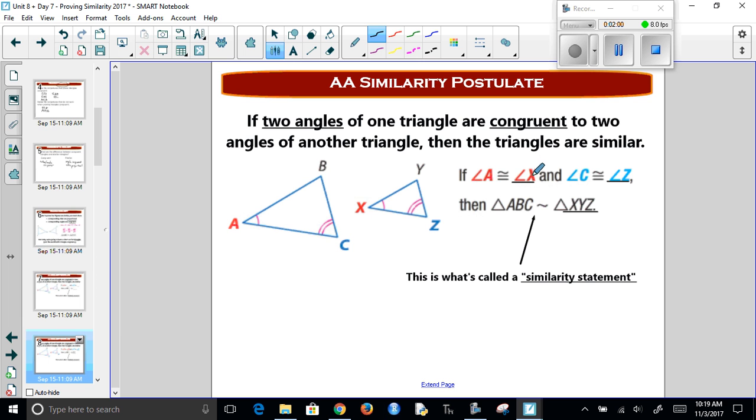So if angle A is congruent to angle X and angle C is congruent to angle Z, then we know that these two are similar triangles. They're not congruent. You can see this is bigger than this one, but we know that they're similar. And some people ask, why isn't this AAA with three A's? Well, if we know two, the third one automatically has to be congruent. So if you wrote AAA, you'd be correct, but the minimum you need is AA.